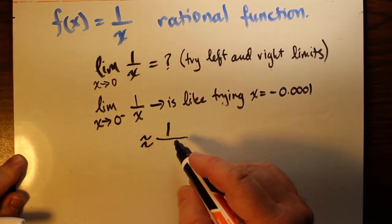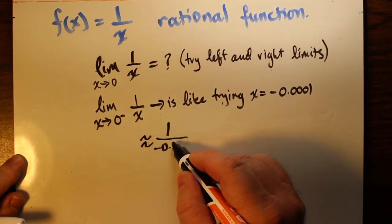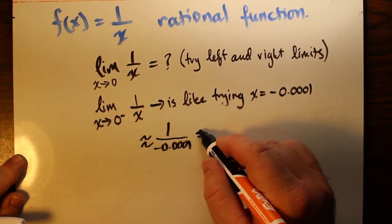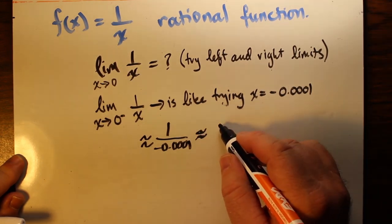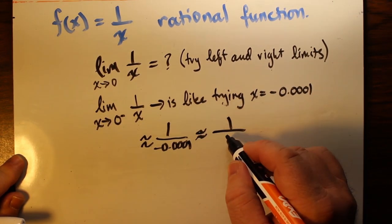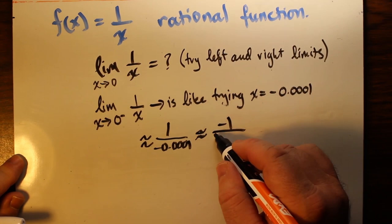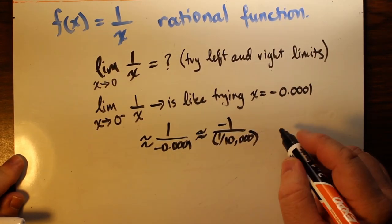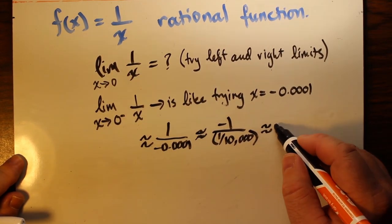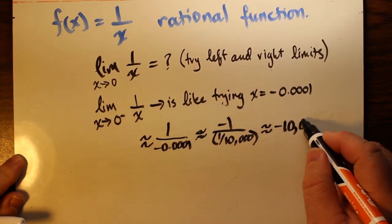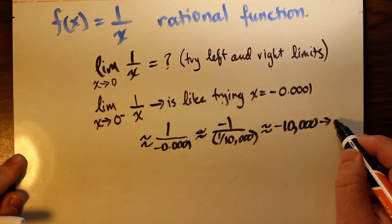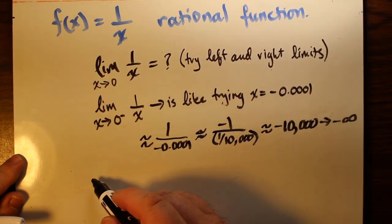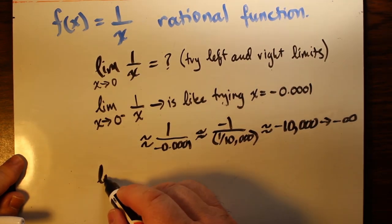So if we try that in our calculation, the limit is about equal to 1 over negative 0.0001, and we continue this approximation by saying negative 1 over 1 over 10,000, which really means our approximation is negative 10,000. If we got closer and closer still, it would get more and more negative, which means we're approaching negative infinity.